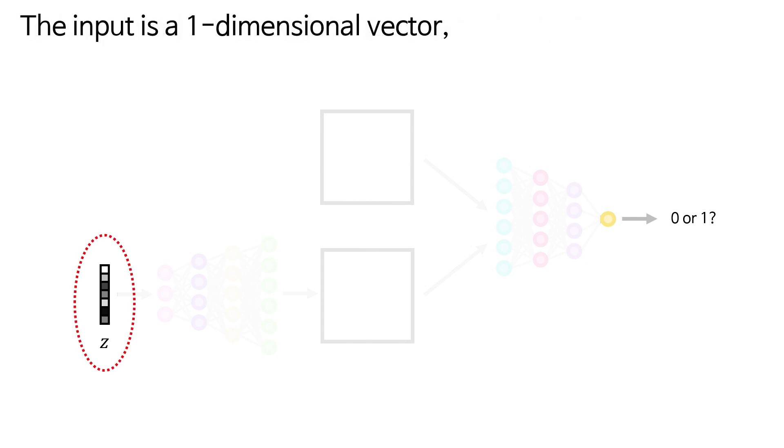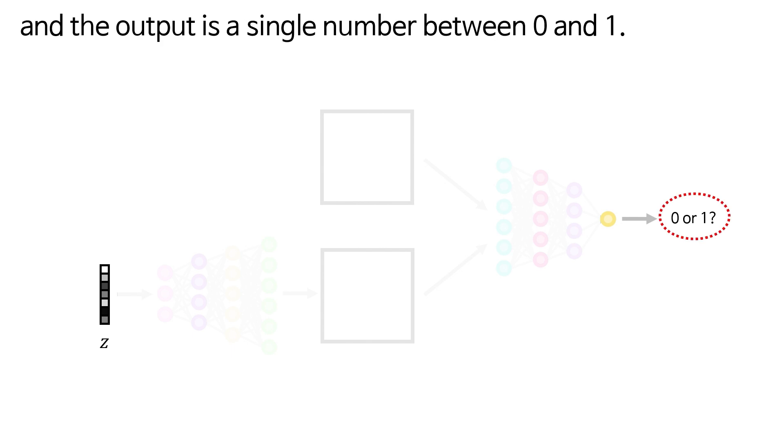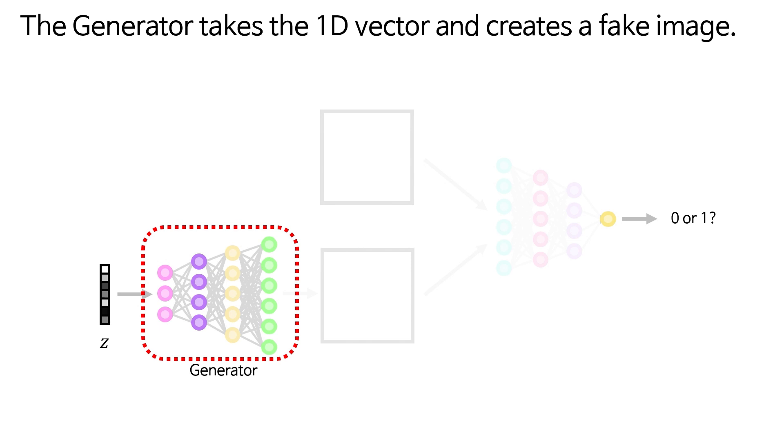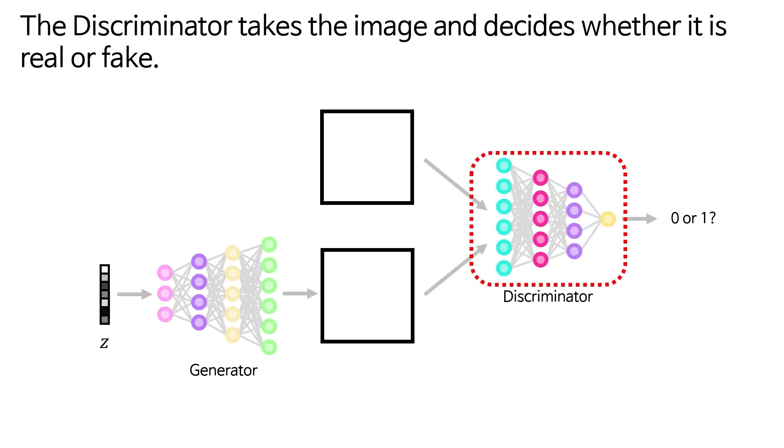The input is a one-dimensional vector, and the output is a single number between 0 and 1. The generator takes the 1D vector and creates a fake image. The discriminator takes the image and decides whether it is real or fake.